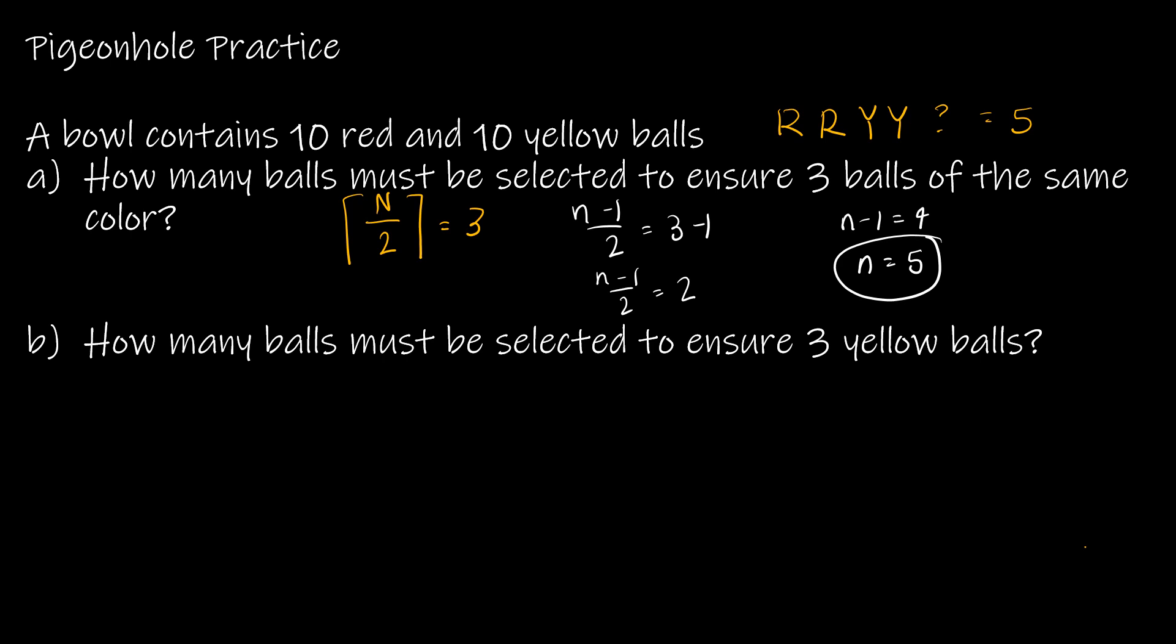The next one can't really be solved with the pigeonhole principle in a direct application. It's saying how many balls must be selected to ensure three yellow balls. So again, I'm going to be thinking about worst case scenario. Worst case scenario says, I'm going to pick a red, and then a red, and then a red all the way through until I run out of reds. Now, we could talk probability, that's not very probable, but possible. So basically, I could have all 10 reds before I draw a yellow, and then I'm going to get a yellow, and a yellow, and a yellow. So the correct answer is 13. And there's really no mathematical way for you to apply n divided by k. There's really no way to do that except to say, you're going to draw all the reds first, and then you're going to start adding yellow balls.